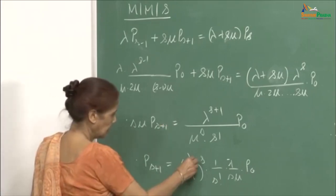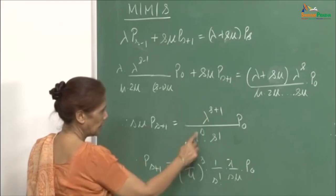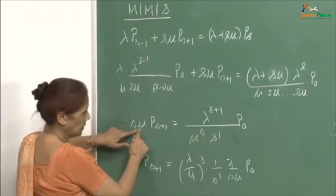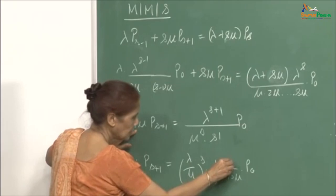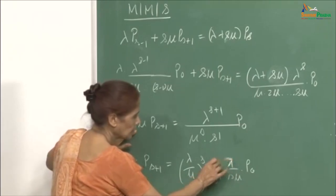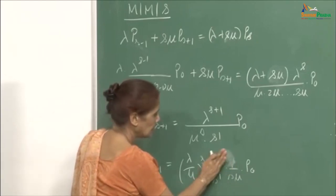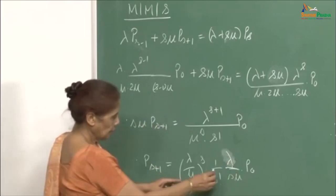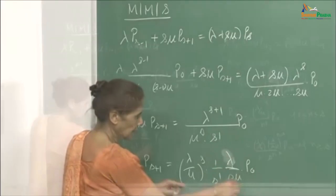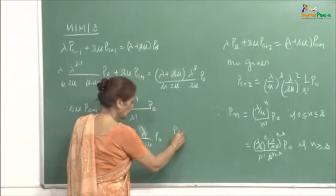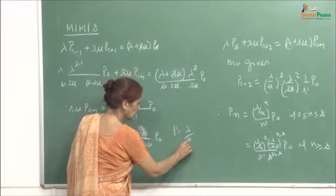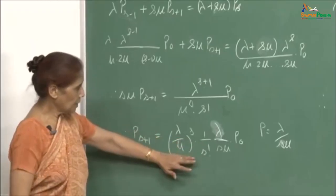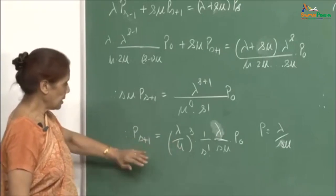Therefore p_{S+1} = (λ/μ)^S · λ / (S! · S·μ), which means when it is S+1 you have this term times λ/(S·μ). So the utilization factor ρ = λ/(S·μ) for S servers. The same formula continues and you can generalize for p_n.